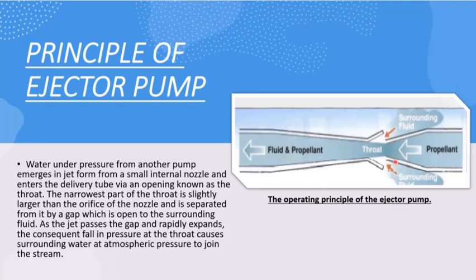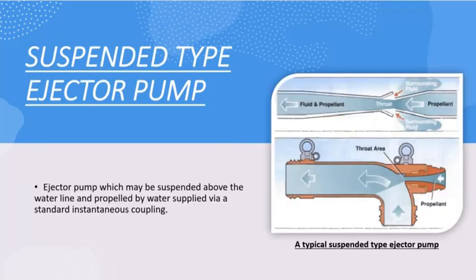Due to the reduced pressure in this region, the surrounding fluid is entrained into the propellant stream, and then the propellant carries the surrounding fluid along with it. This is how the ejector pump works.